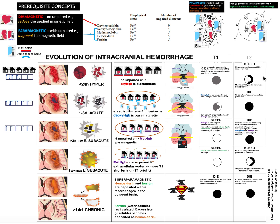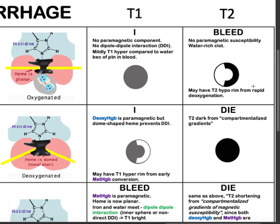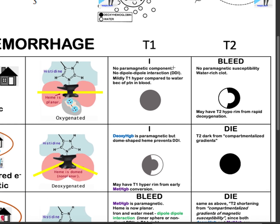Hematomas age from the periphery to the center, so there will be instances where the periphery is rapidly aging. In the hyperacute stage, you have an iso-intense signal on T1 and a hyperintense signal on T2. There might be a T2 hypointense rim, and this can be explained by the rapid deoxygenation or early deoxygenation of the periphery.